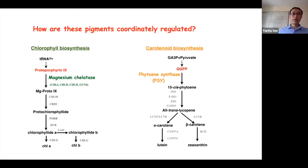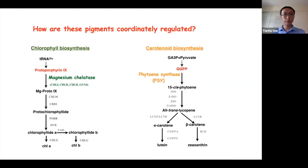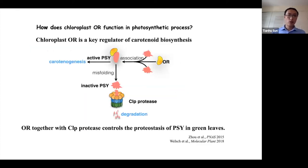How are these pigments coordinately regulated? Both chlorophyll and carotenoids are synthesized inside chloroplasts. Magnesium chelatase is the first committed step for chlorophyll biosynthesis using protoporphyrin IX as substrate. Magnesium chelatase consists of four different subunits: CHLI, CHLD, CHLH (also known as GUN5), and GUN4 subunit. Phytoene synthase, PSY, is the first committed step of carotenoid biosynthesis using GGPP as substrate. Previously, we identified that chloroplast OR is the key regulator of carotenoid biosynthesis — OR together with CLIP properties controls the steady-state protein level of PSY in green leaves.